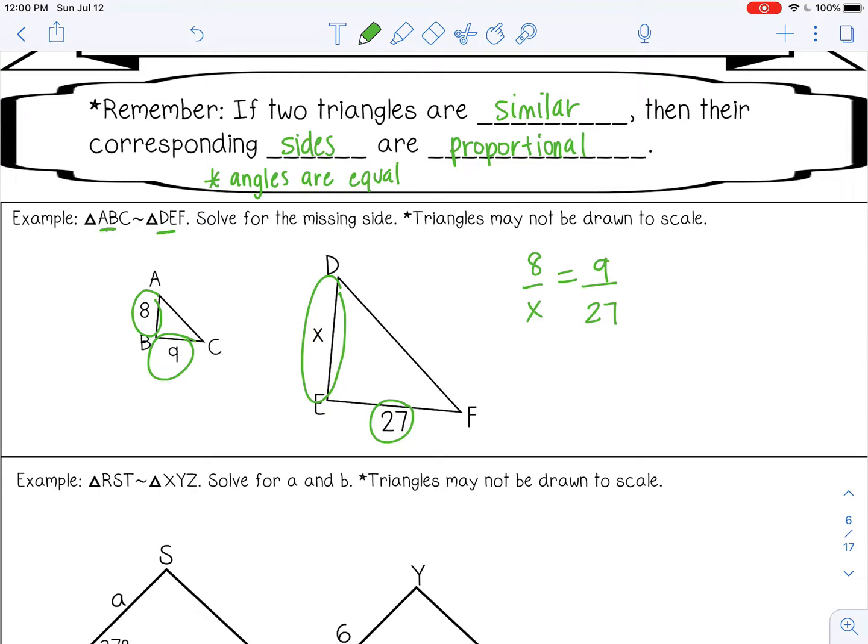And 9 over 27. Then to solve for X, I can cross multiply. So 27 times 8, that's 216. X times 9 is 9X. And then I can divide both sides by 9. So that gives me X equals 24.